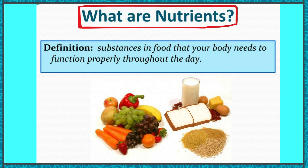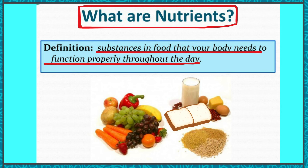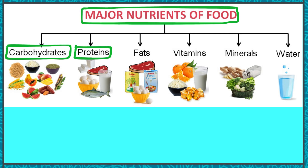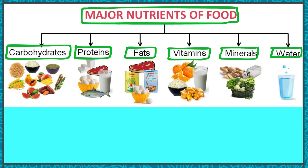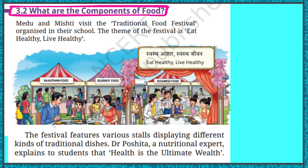What are nutrients? Nutrients are substances in food that your body needs to function properly throughout the day — all the food components that give us energy and help us carry out our daily activities. The nutrients found in food are: carbohydrates, proteins, fats, vitamins, minerals, and water. These are all the components that make up our food. Let us study them in detail.